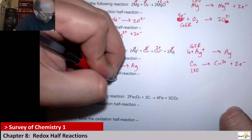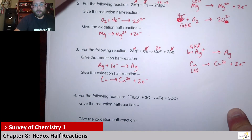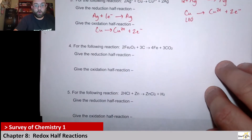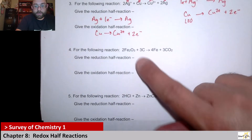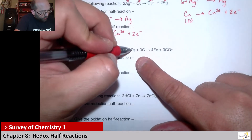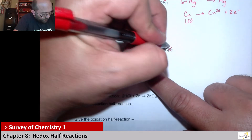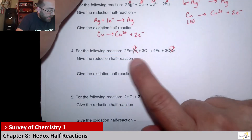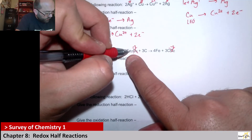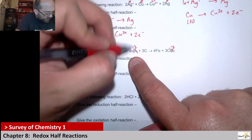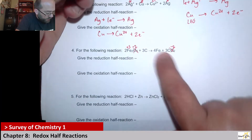So Cu gives Cu²⁺ plus two electrons. Next up, number four: we've got iron oxide and carbon. The oxygens don't really play a part here because they're both negative twos, so we ignore those in these half reactions. We're really looking at iron and carbon. There are two irons with a total of negative six from the oxide, so this has to be positive six — meaning each iron is plus three, and here it's zero.